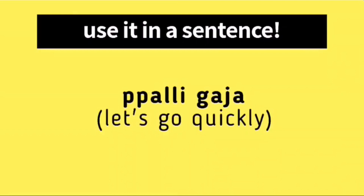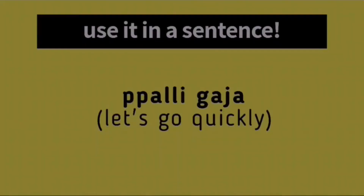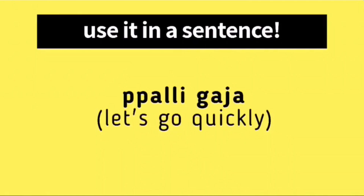Now let's try looking at this example. It says 'pali kacha'. This sentence could be subdivided into two parts. The first part is 'pali' and this is used to say 'quickly'. And the second part is 'kacha', which is a way to say 'let's go'. So when we combine those two, it results in a sentence that means 'let's go quickly'.